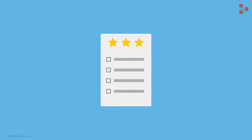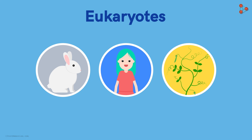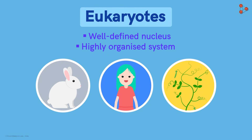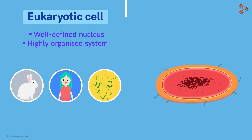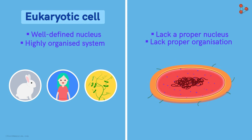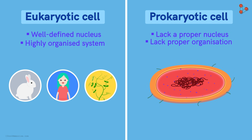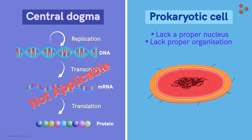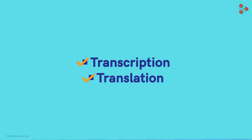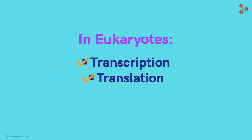There is an extremely important thing to note here. Whatever we have talked about so far concerns the processes in eukaryotes — such a high level of organization is found only in eukaryotic cells, which have a well-defined nucleus and a highly organized system. Cells which lack a proper membrane-bound nucleus and organization are called prokaryotic cells. Since they lack the proper membrane-bound organelles and nucleus, they do not undergo such complex and sophisticated processes, so the replication process in prokaryotes is slightly different. This was a brief idea about the transcription and translation process as seen in eukaryotes. For more interesting concepts in genetics, tune in to our channel and don't forget to subscribe!